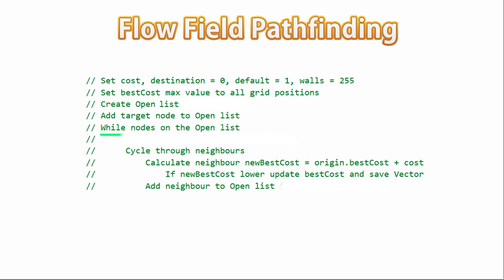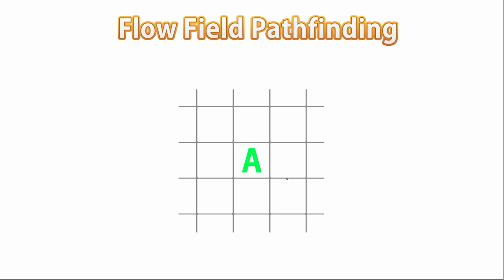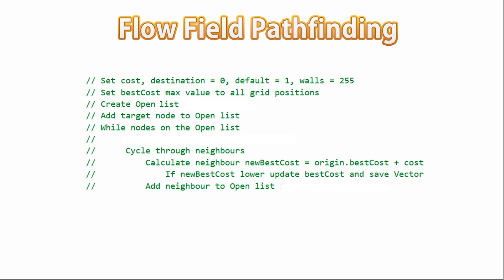The neighbors are all the nodes around it — meaning the nodes that can directly reach this node. This is also where you can make a choice: do you want just 4-way movement, or do you want 8-way? Both can work — meaning do you want units to just be able to move straight between positions, or do you want them to also be able to use diagonals? Both are perfectly valid options. In this case we are going to add diagonals, so the neighbor nodes for each node are going to be all 8 surrounding nodes. So back in the algorithm, we cycle through all the neighbors. And then for each of those neighbors, we're going to calculate a new best cost, which is the best cost of the origin node plus the cost of moving to that node.